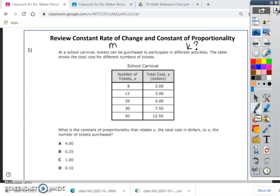Our first question says, at a school carnival, tickets can be purchased to participate in different activities. The table shows the total cost for different numbers of tickets. What is the constant of proportionality that relates y, the total cost, to x, the number of tickets purchased? It's telling us right now that this is proportional. I don't even have to check. It's already telling us that when we do delta y over delta x, that not only is it m, it's also k. I know this because it's saying what's the constant of proportionality, so we know it's proportional.